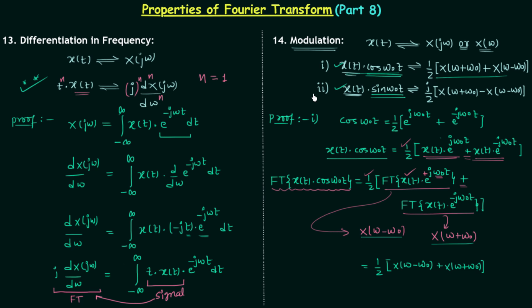To prove the second property, simply use sin(ω₀t) = (1/2j)[e^(jω₀t) − e^(−jω₀t)], follow the same steps, multiply x(t) on both sides, and then apply the frequency shifting property. This is all for this lecture; see you in the next one.